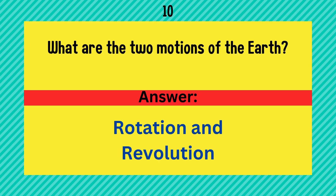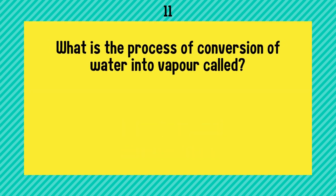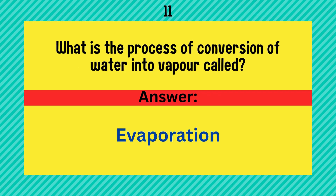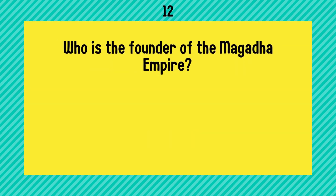What are the two motions of the earth? Rotation and revolution. What is the process of conversion of water into vapor called? Answer is evaporation.